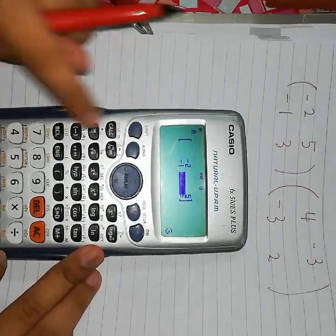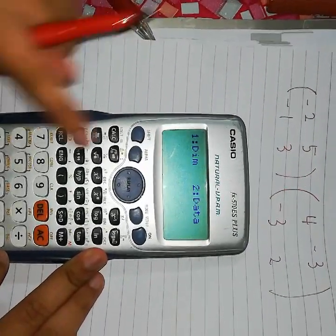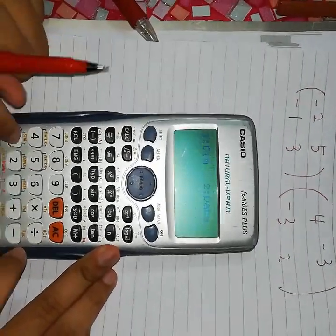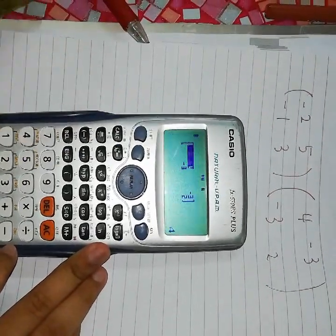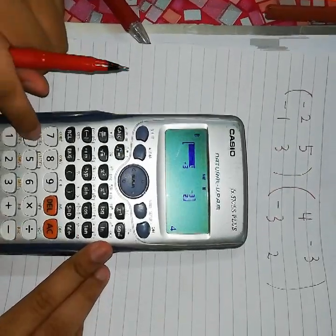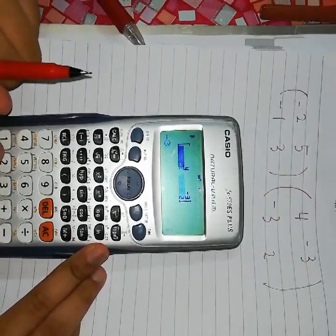Tekan shift, tekan matrix, tekan dim. Lepas tu, pergi ke mat B pula. Lepas tu, lajur yang sama, baris yang sama. Lepas tu, isi je balik. Empat, negatif 3, negatif 3, dua.